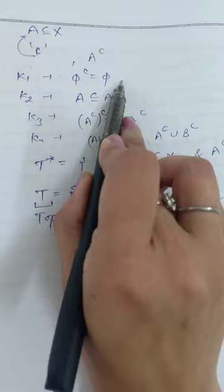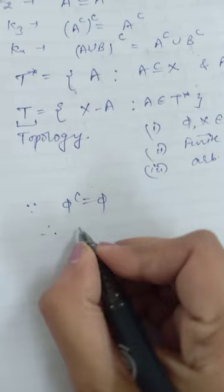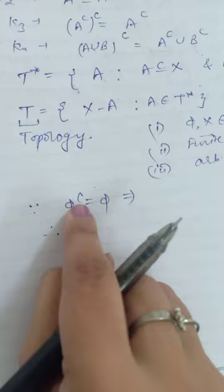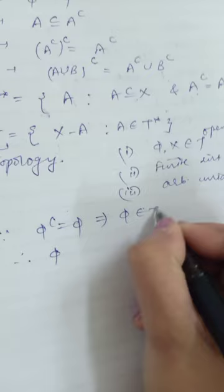To prove φ belongs to T: by K1, the empty set Kuratowski equals φ. Therefore φ satisfies the condition for membership in T*, so φ belongs to T*. The complement of φ, which is X, belongs to T.